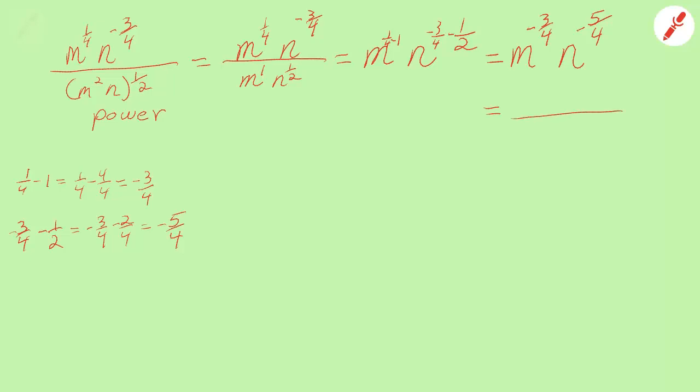In the denominator, I'll have m to the three-fourths power positive, n to the positive five-fourths, with a one on the top of the fraction.